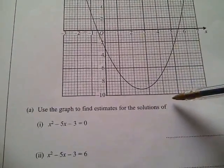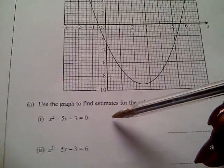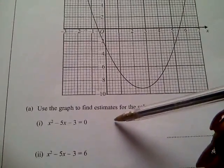Use the graph to find the estimates for the solutions of ai that has x squared minus 5x minus 3 equal to 0.